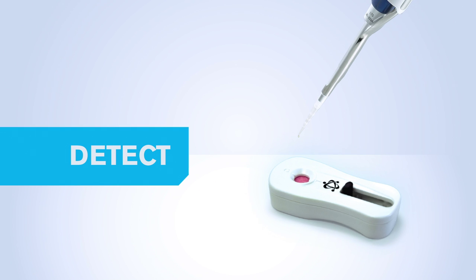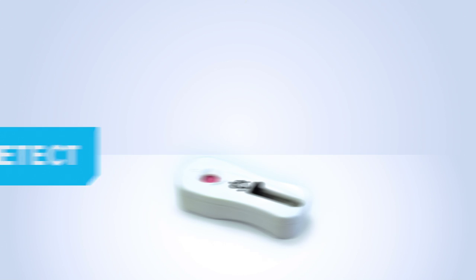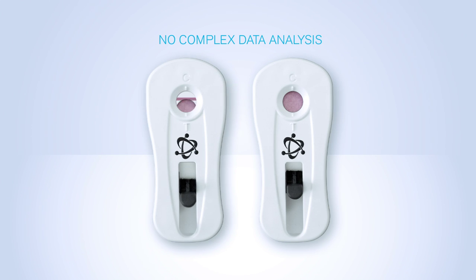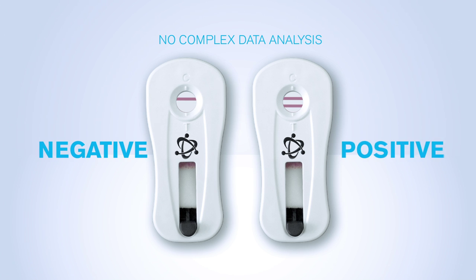Transfer the amplified contents of the tube onto the cassette window. Retract the switch on the cassette to reveal the results in the window. One line is negative and two lines are positive.